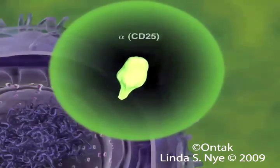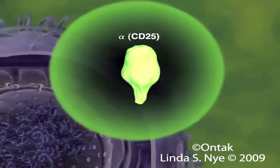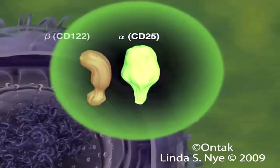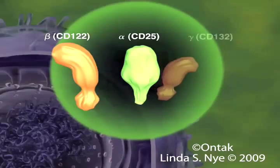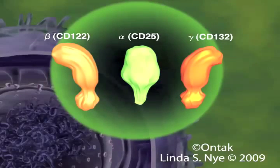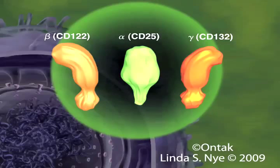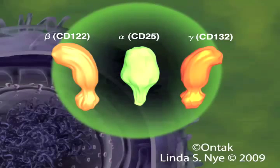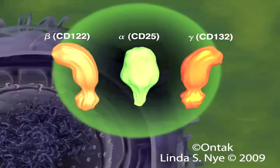The IL-2 receptor is composed of three polypeptides: the alpha or CD25 chain, the beta or CD122 chain, and the gamma or CD132 chain. The beta and gamma chains are similar to other members of the class 1 cytokine receptor family. However, the alpha chain is a member of a unique class. The IL-2 receptor exists in at least three forms that vary with respect to subunit composition.